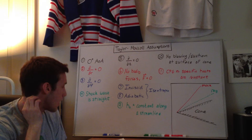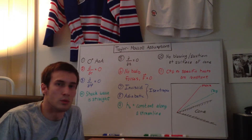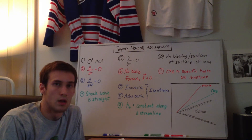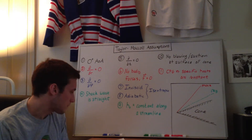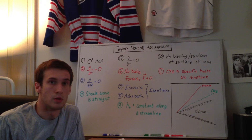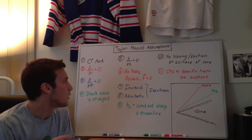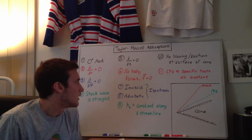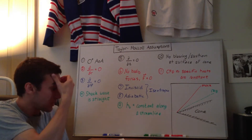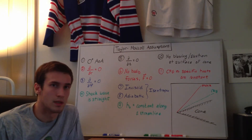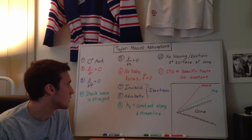Number five is steady flow, so all the time derivatives are equal to zero. This is important for the continuity equation that we'll go over in the next video — we assume a steady state flow. It comes into play in the continuity equation when you're transforming it into spherical coordinates. Number six is that there are no body forces, so this body force vector F is equal to zero, which means we're ignoring any gravitational forces, electromagnetic forces, and so forth. This comes into play in Euler's equations.